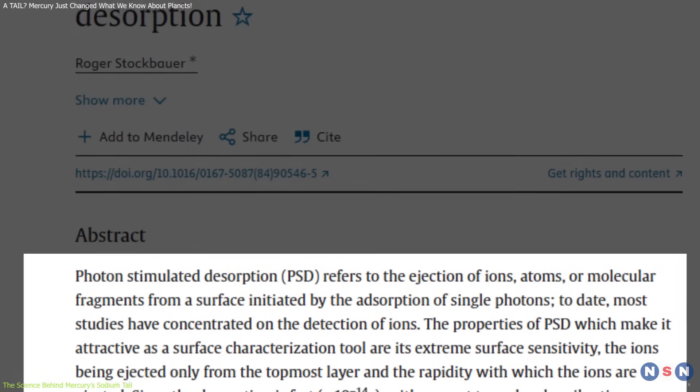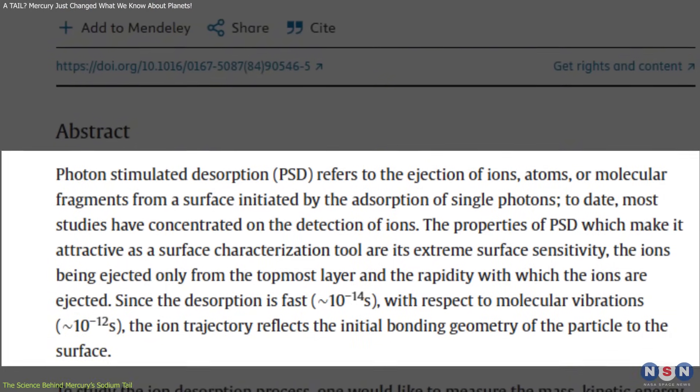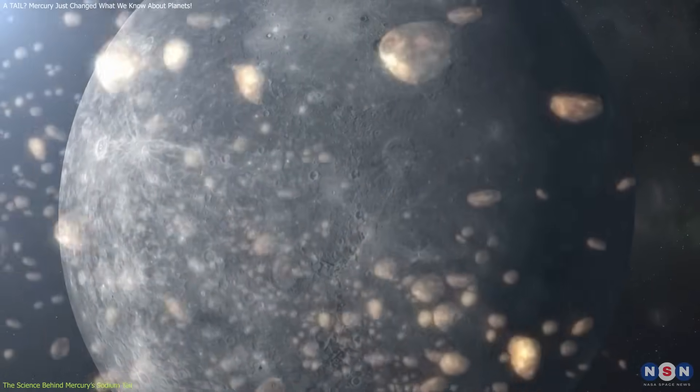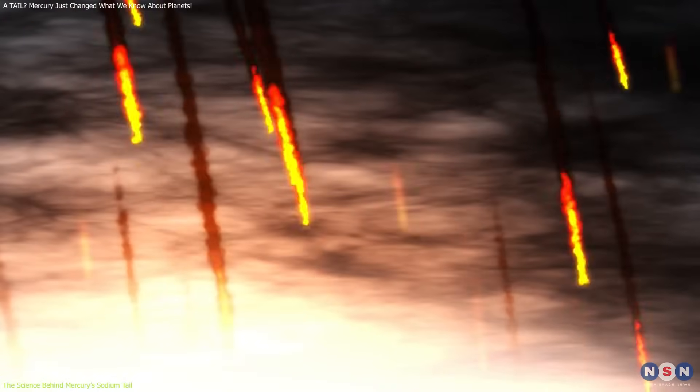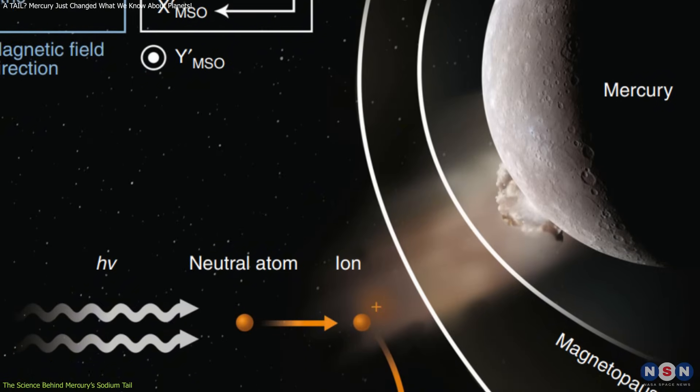Additionally, ultraviolet sunlight knocks sodium atoms loose in a process called photon-stimulated desorption. Mercury is also constantly bombarded by micrometeoroids, tiny grains of space dust traveling at high speeds. These impacts vaporize parts of the surface, launching more material into Mercury's thin exosphere.